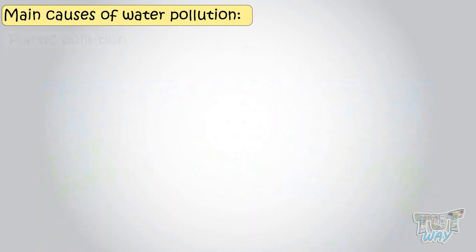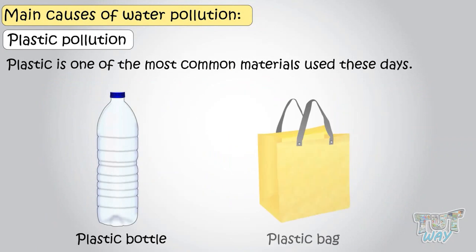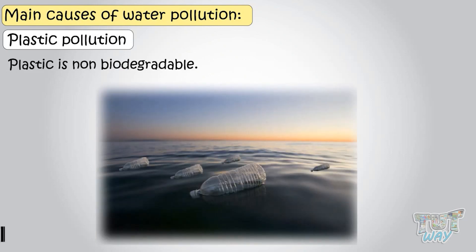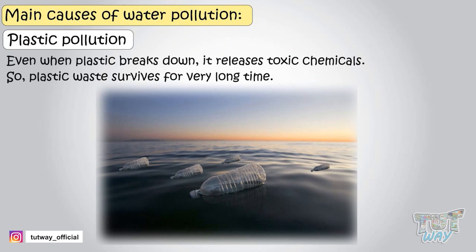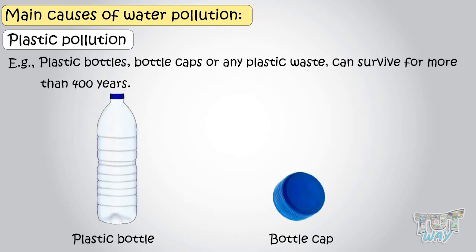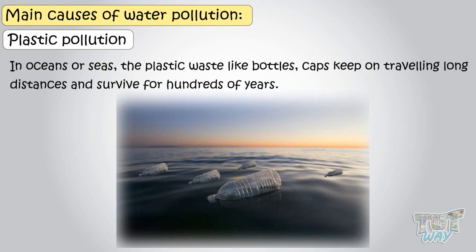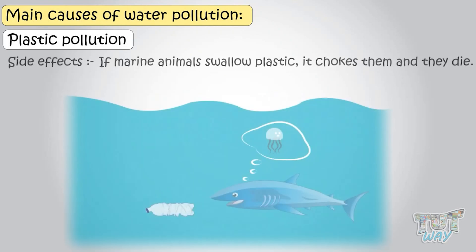One more source of pollution is plastic. Plastic is one of the most common materials used these days. The worst fact is that plastic is non-biodegradable — that is, plastic does not break down or decompose easily like other types of waste. And even when plastic breaks down, it releases toxic chemicals. So plastic waste survives for a very long time; for example, plastic bottles, bottle caps, or any plastic waste can survive for more than 400 years. In oceans or seas, plastic waste like bottles and caps keeps traveling long distances and survives for hundreds of years. And if marine animals swallow plastic, it chokes them and they die.